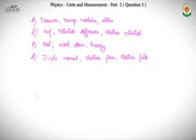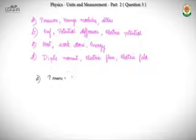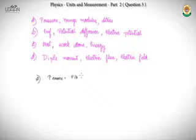Checking option A: pressure equals force upon area. The key point is we don't need to find the actual dimensions — just the relations. Stress is also force upon area. Young's modulus relates to stress via the equation: stress = Young's modulus × strain, and strain (ΔL/L) is dimensionless.